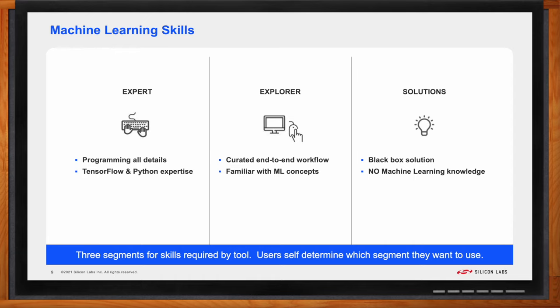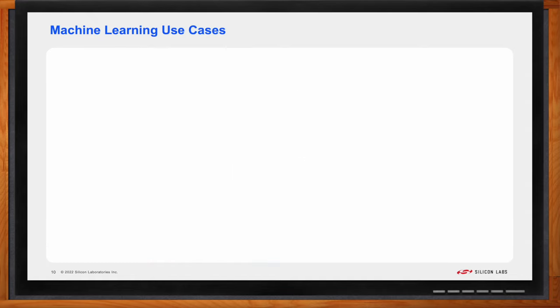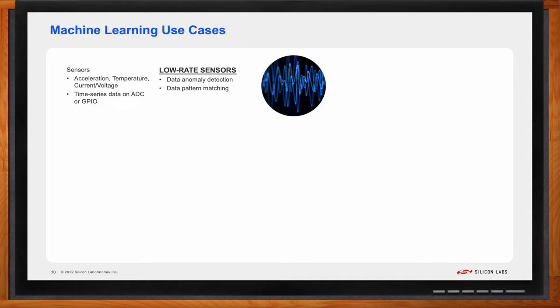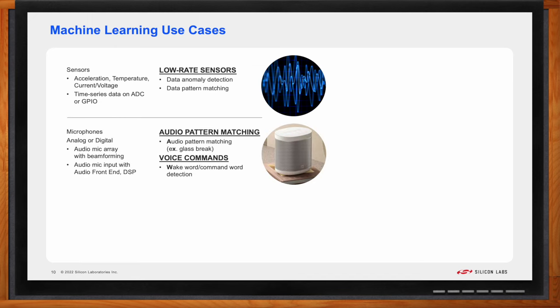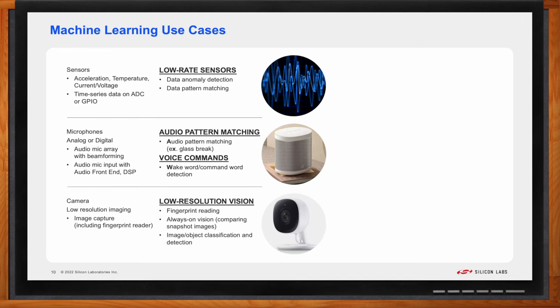That makes sense. So how do you define use cases? For this, we use the application segmentation I described at the beginning of this presentation. And if you recall, there were four categories. There's the low data rate sensors. These are use cases based on accelerometers, temperature sensors, and the like to support applications like anomaly detection. There's audio pattern matching. This is the use of a microphone to detect any kind of non-speech sound. There's the voice commands using the same microphone, but detecting spoken words. And then there's vision. We focus on the topic of image classification and object detection using low-resolution cameras. In all of these use cases, the output is the same. Was some pattern detected? And does it classify as an event worth acting upon?